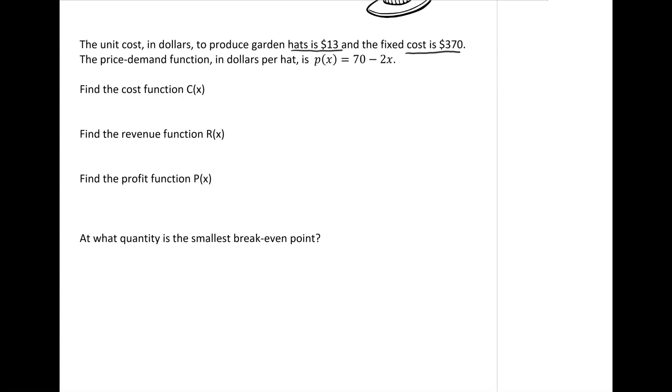We can come up with a cost function because our cost is going to be the per-item cost, which is $13 per item, so C(x) = 13x, where x is the number of hats, plus the fixed cost which is $370. So let's make a note here that x represents the number of hats.